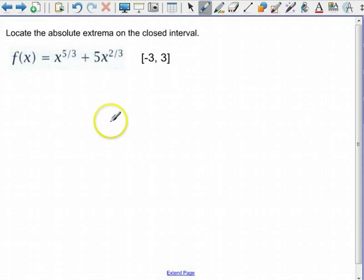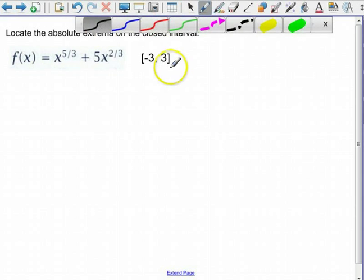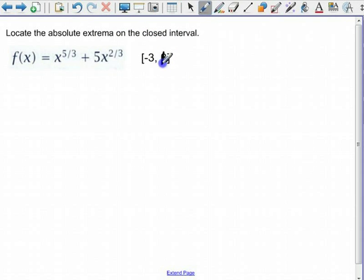Let's do one more example. We're going to locate the absolute extrema on the closed interval of this function, f(x) equals x to the 5 thirds power plus 5x to the 2 thirds power over this interval. You know what? I've changed my mind. I would like to do this from negative 3 to 1 because that's just going to make our lives easier.